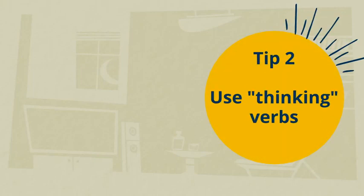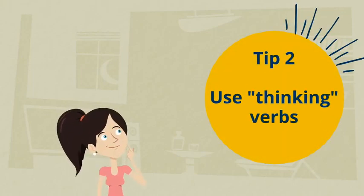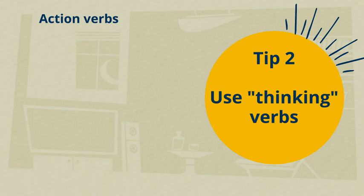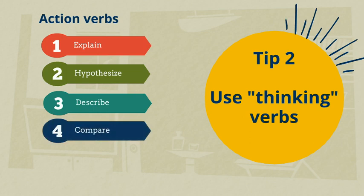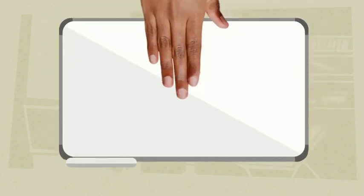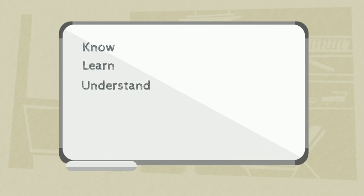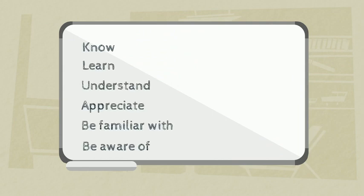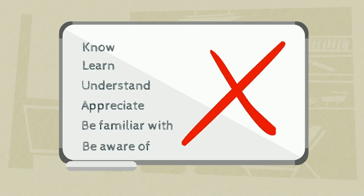Tip number two: use thinking verbs. Figure out what kind of thinking you want the students to do for each topic. Be specific and use action verbs. For example, students will explain, hypothesize, describe, compare, or predict. Never use words like know, learn, or understand, because your students could interpret them to mean anything from memorizing vocabulary to defending an argument.